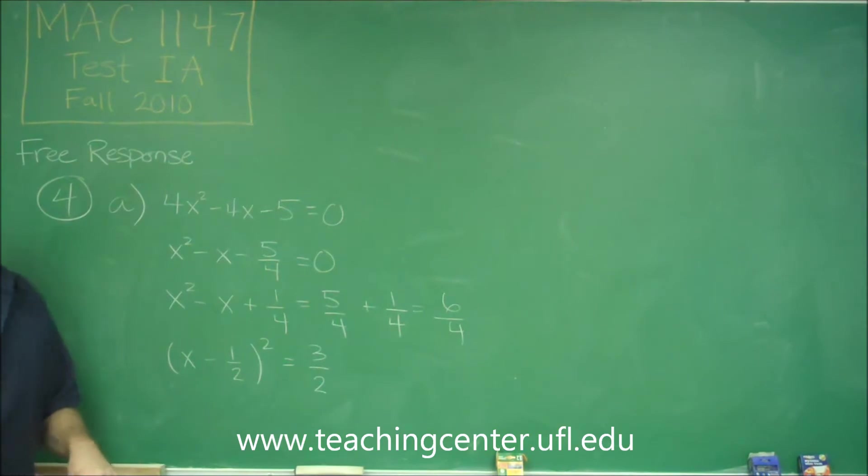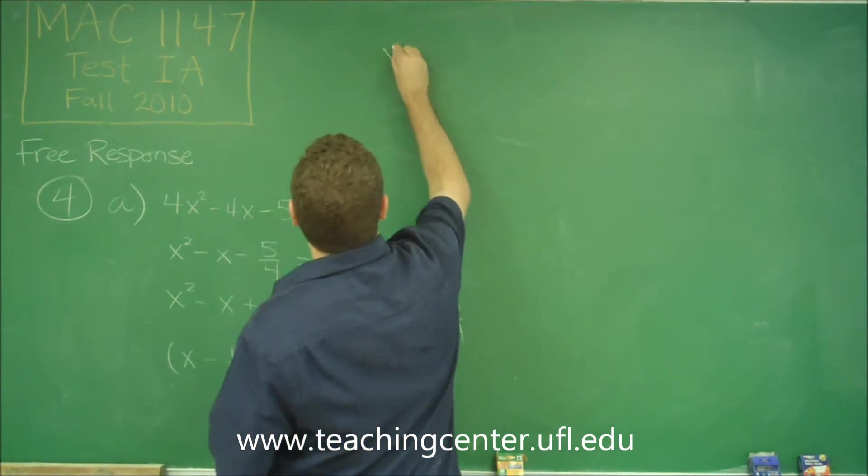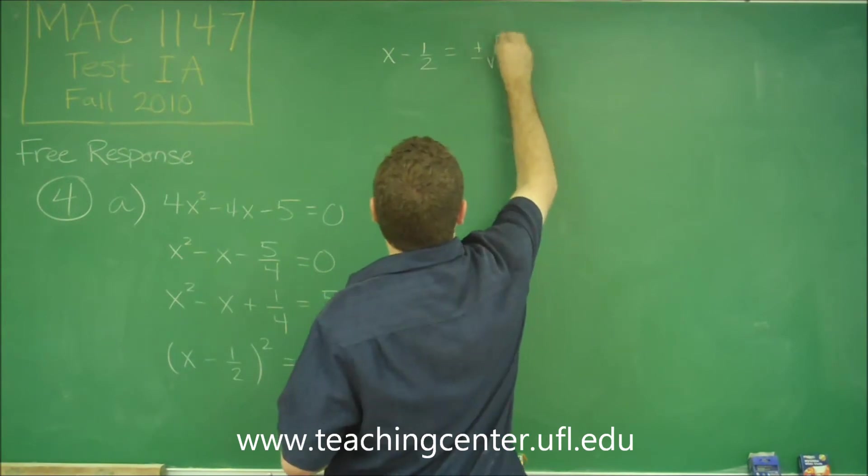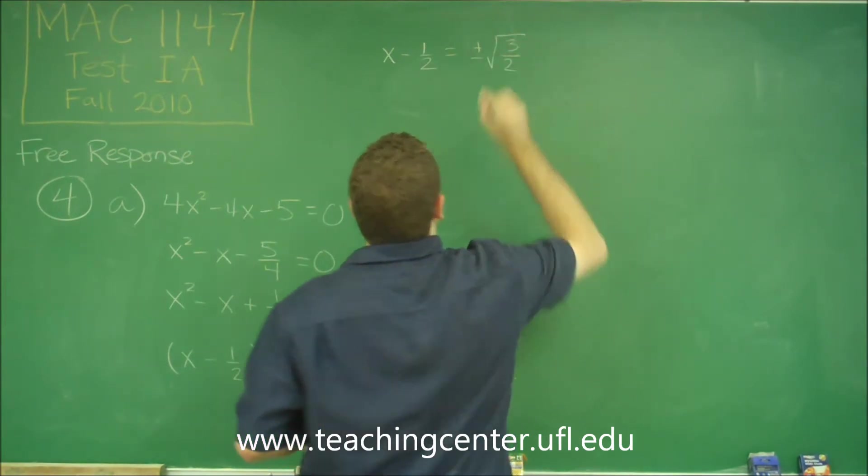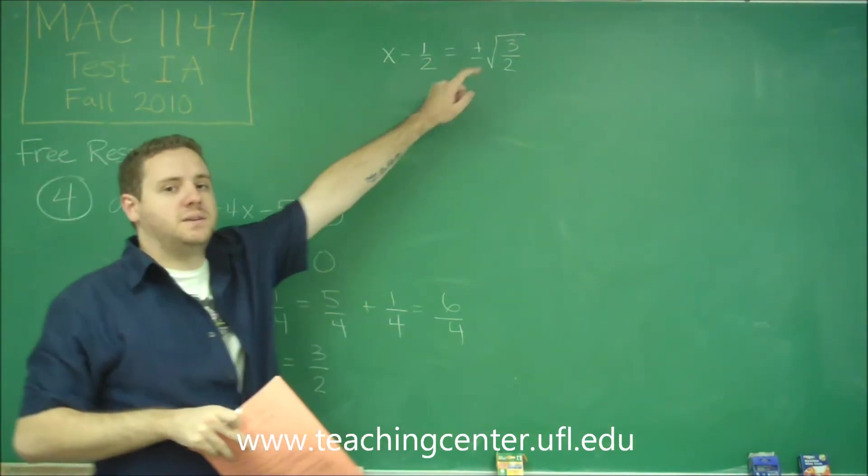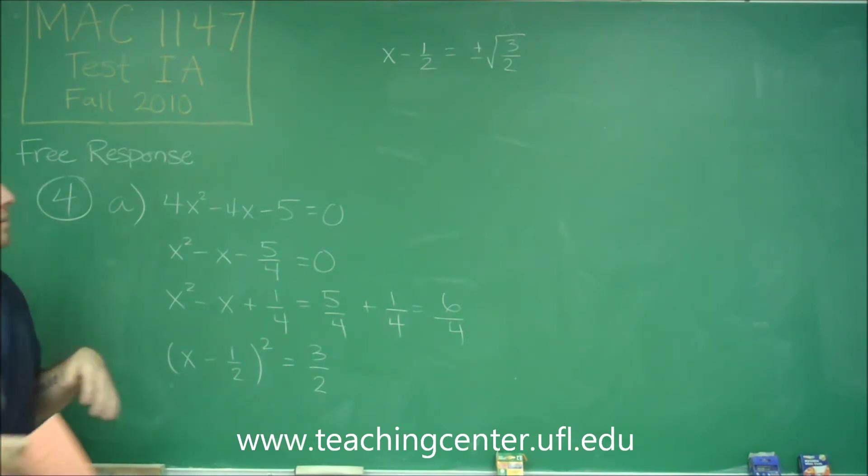Well now, this is a much easier equation to solve. So solving this here, we would get x - 1/2 by taking the square root of both sides is equal to ± √(3/2). Remember that you always have to put a ± here if something squared equals a particular number, because it could have been the positive or the negative part of it.